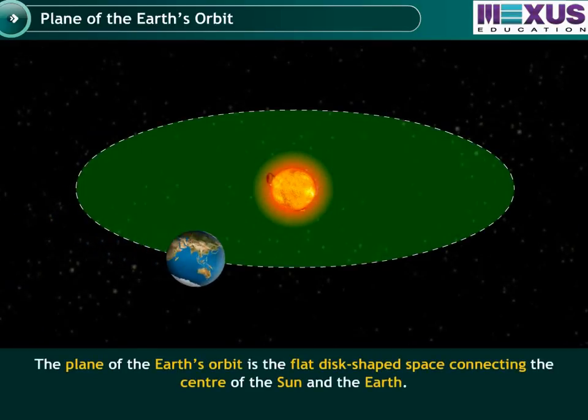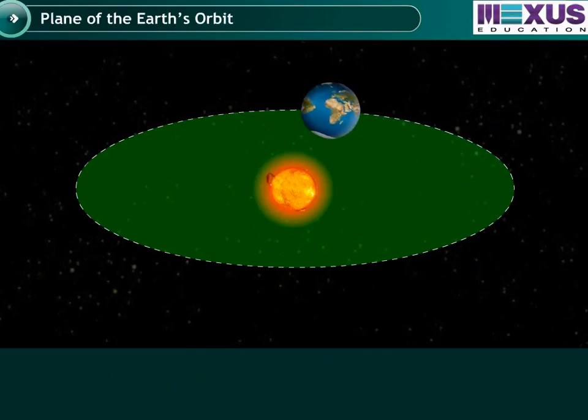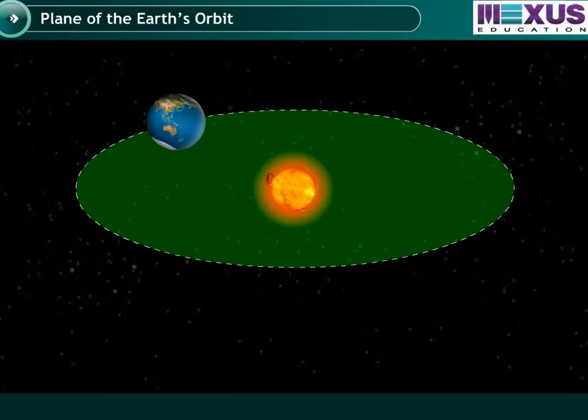The plane of the Earth's orbit is the flat disk-shaped space connecting the center of the Sun and the Earth. Let's do an experiment to understand the plane of the Earth.